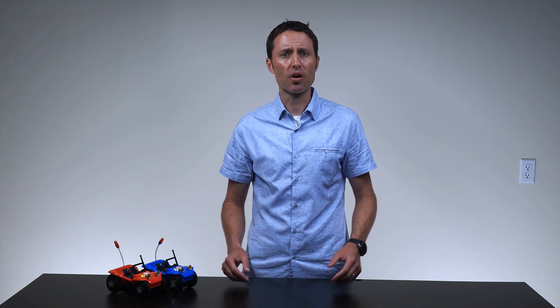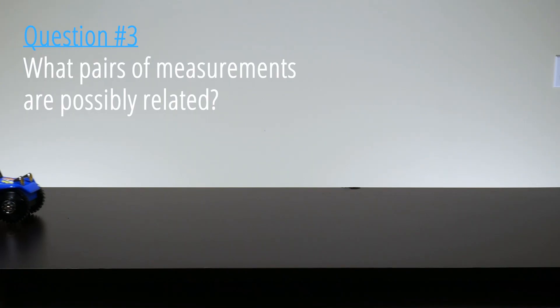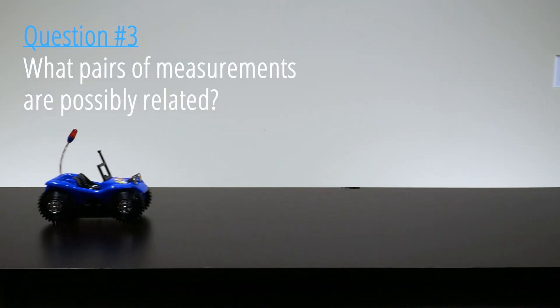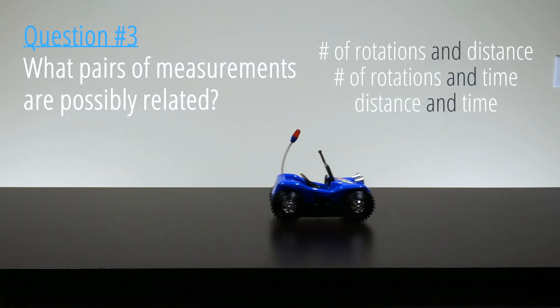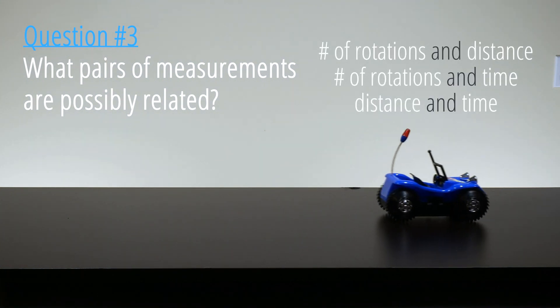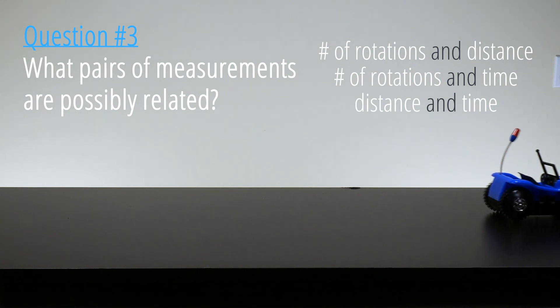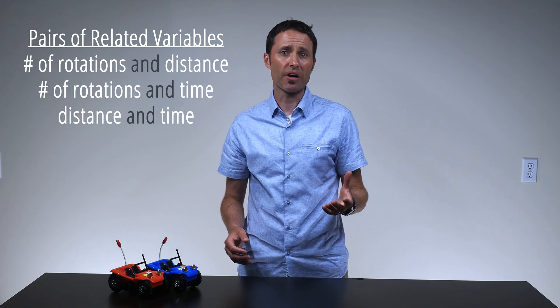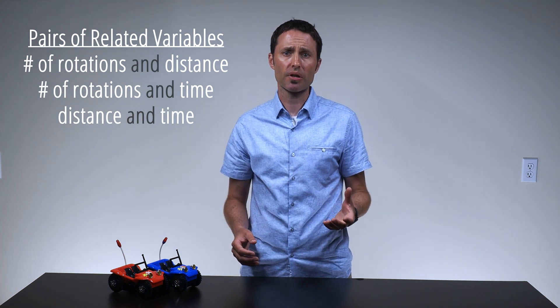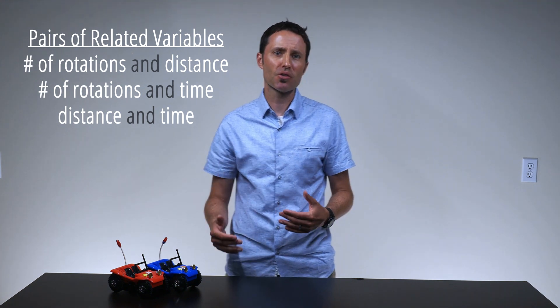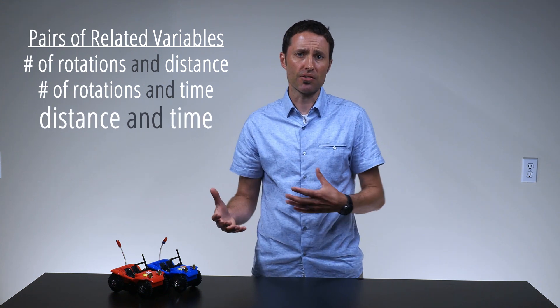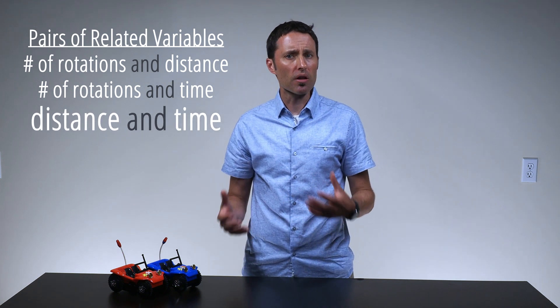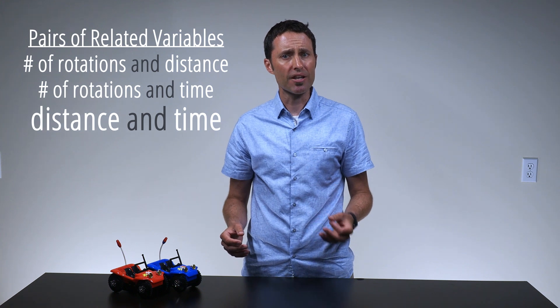Finally, ask students what pairs of measurements they think are possibly related and write these on the board. As a class, the students will investigate the relationship between one of the pairs of variables which are listed on the board. In order to reach the desired conclusion from the lab experience, you need to continue to ask students for possible pairs of related variables until they mention time and distance. Communicate that all of the listed pairs of variables would lead to interesting experiments.